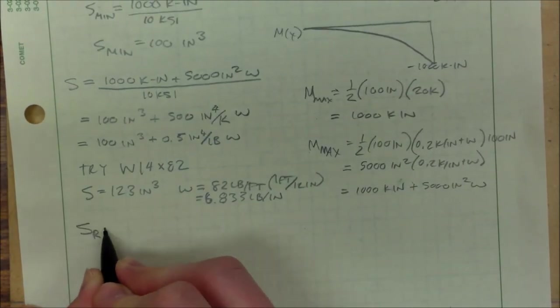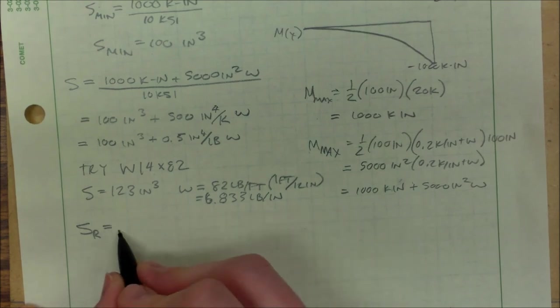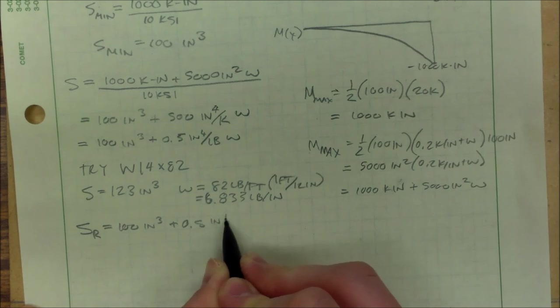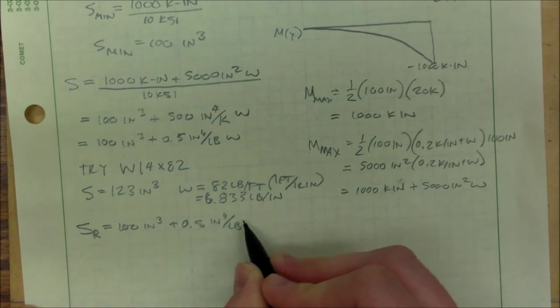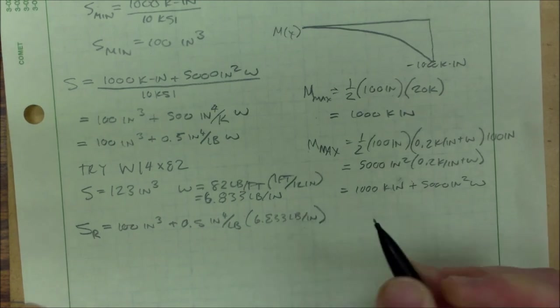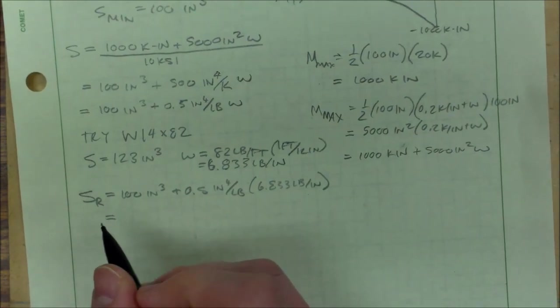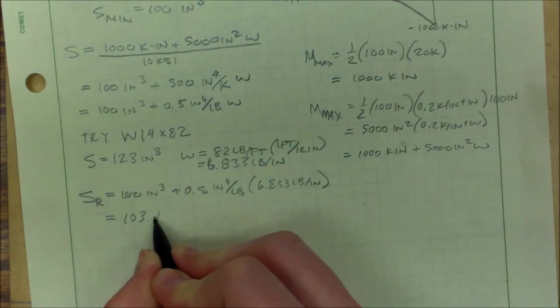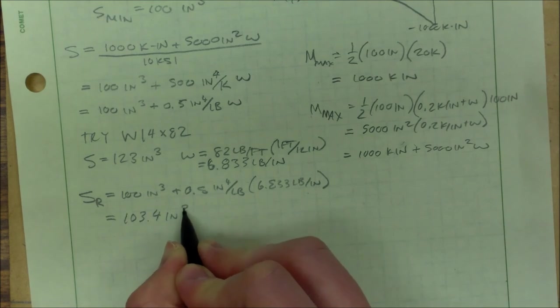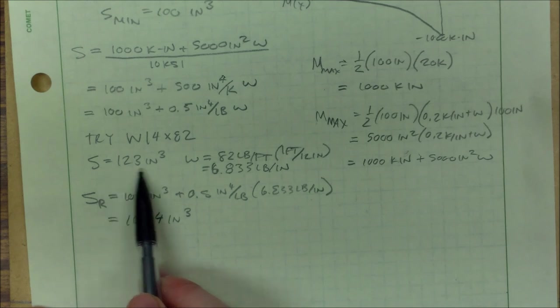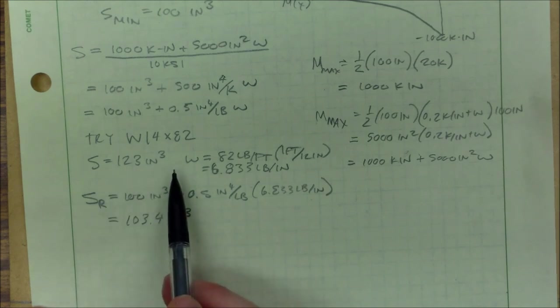So S, I'll put R for required, equals 100 inches cubed plus 0.5 inches to the fourth per pound times 6.833 pound per inch. And that gives us a section modulus of 103.4 inches to the third.